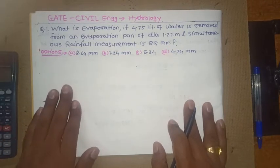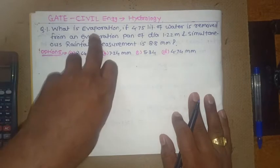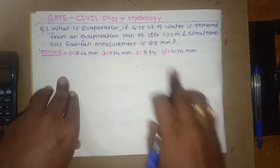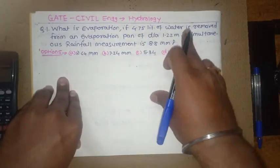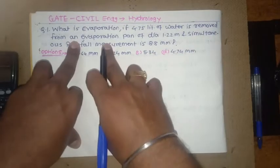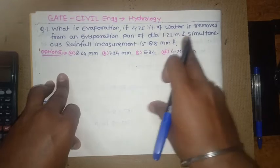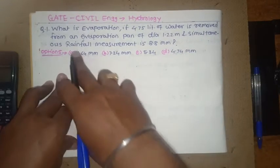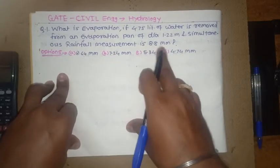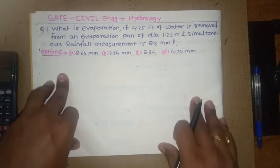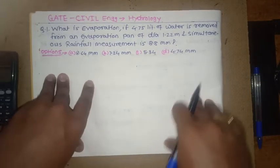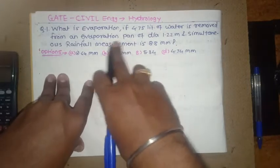We have to find evaporation if 4.7 liters of water is removed from the evaporation pan of diameter 1.22 meters and simultaneously the rainfall measurement is 8.5 mm. The basic principle of this evaporation pan or instrument is water budgeting.